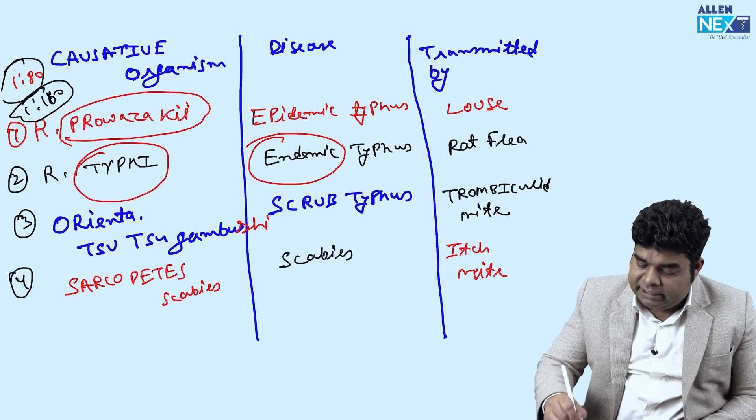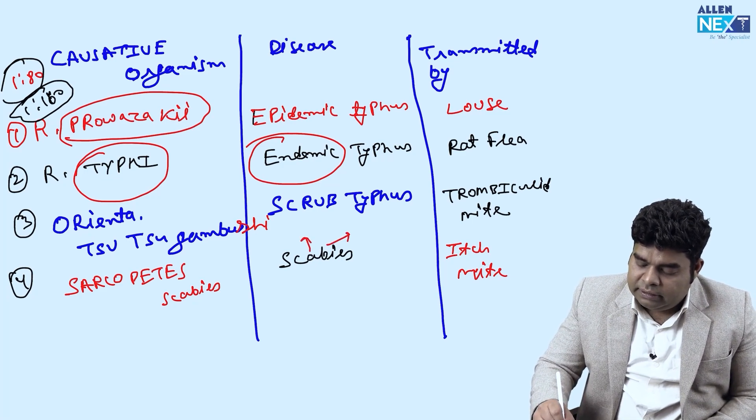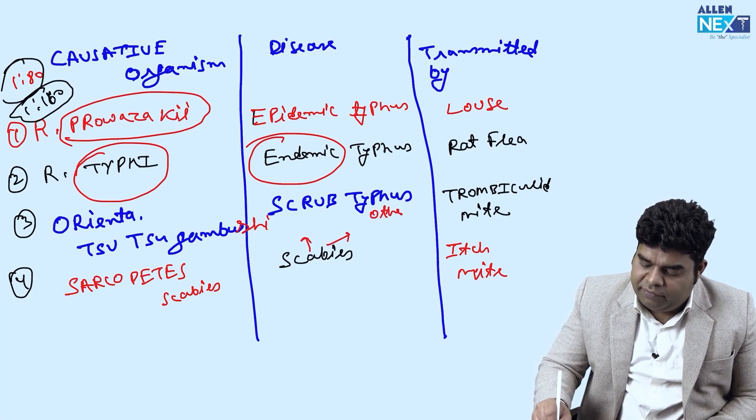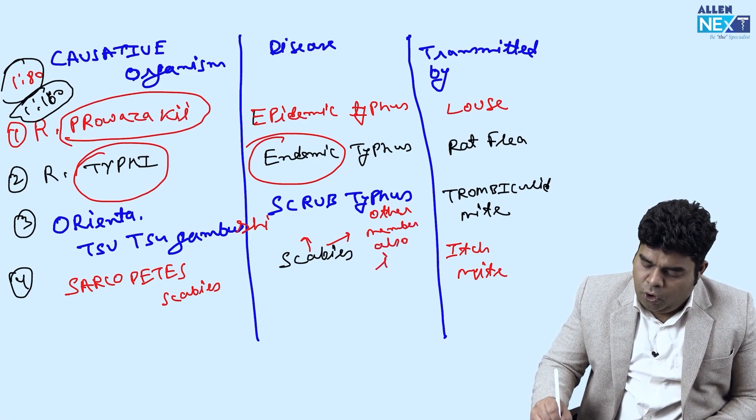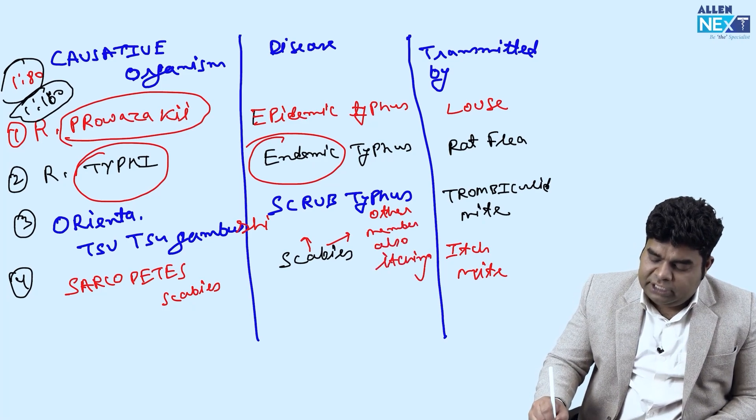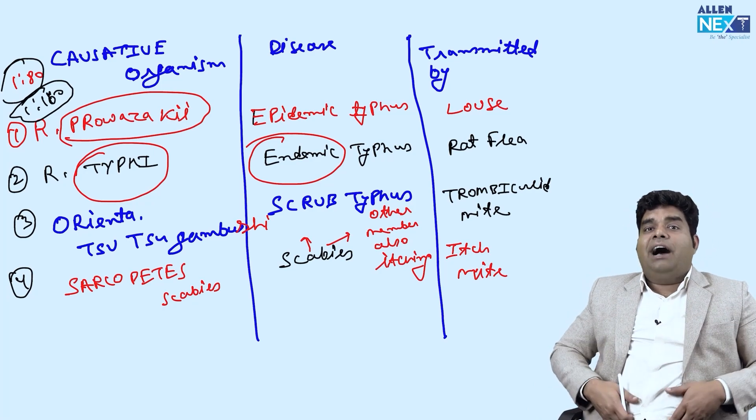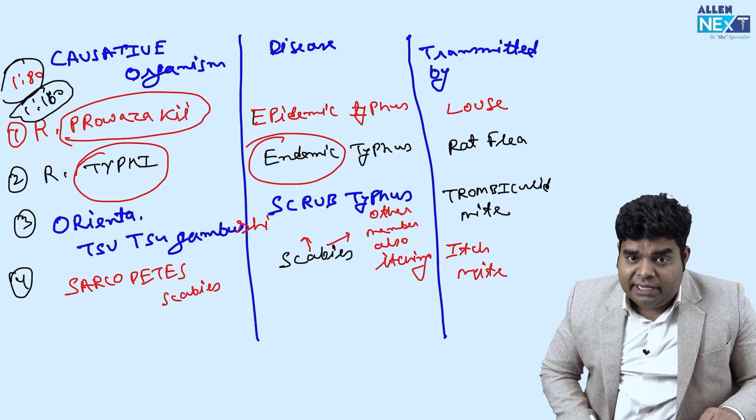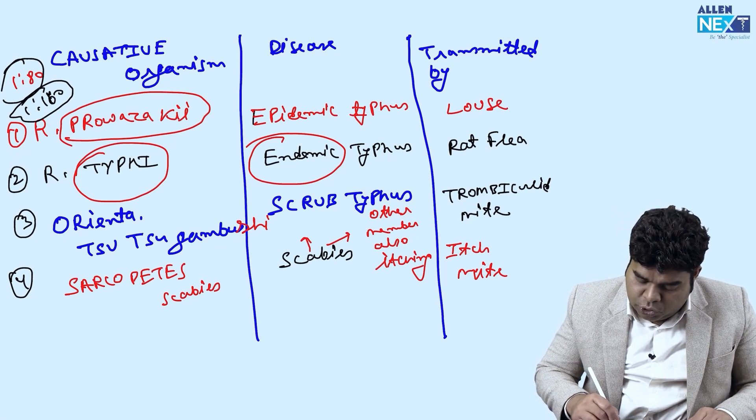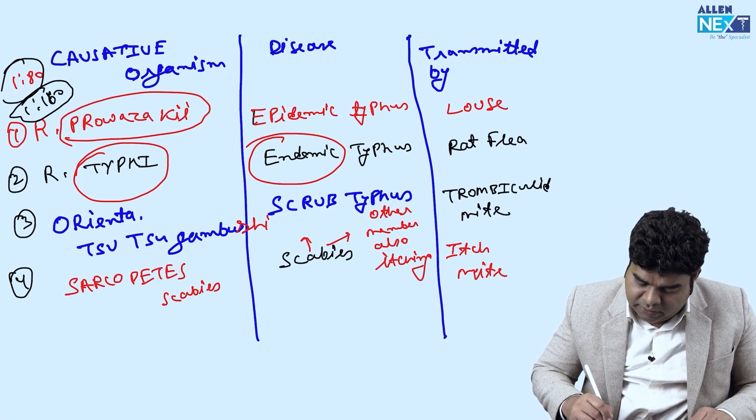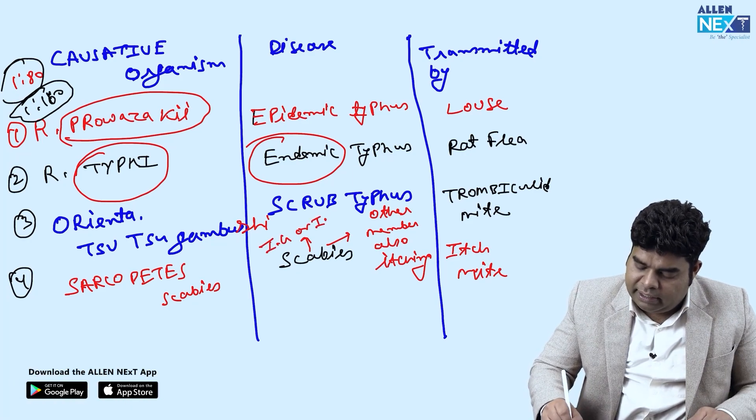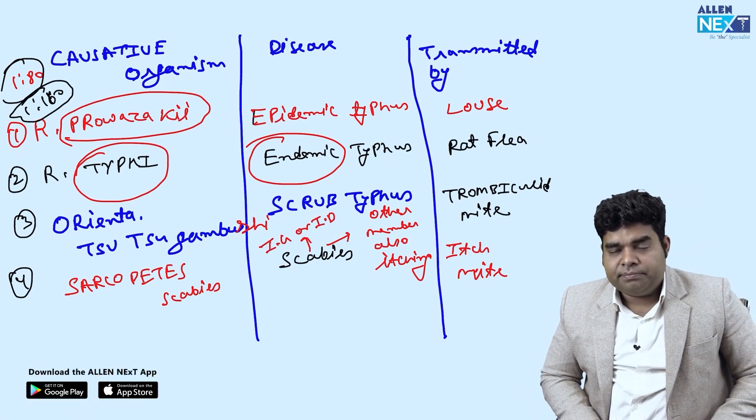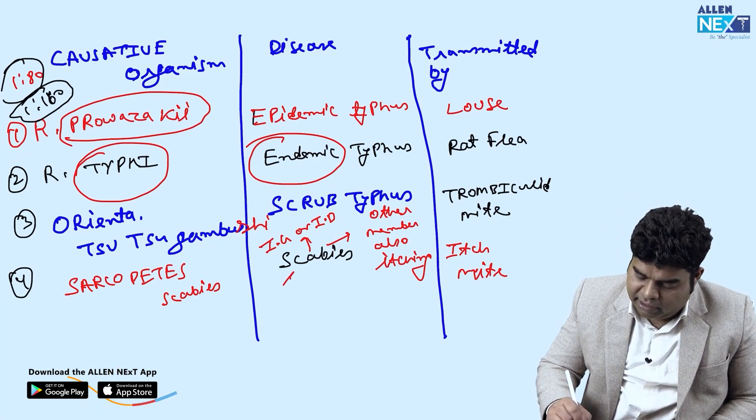Whenever you get in exam two hint that other member also have itching or the itching is present in inguinal area or interdigital area that is scabies. Do remember these two hint they give usually, inguinal or interdigital area itching.